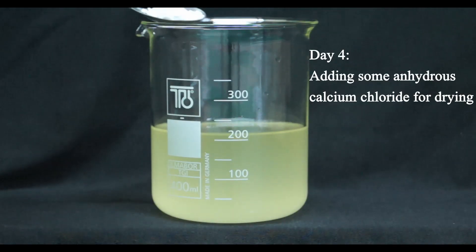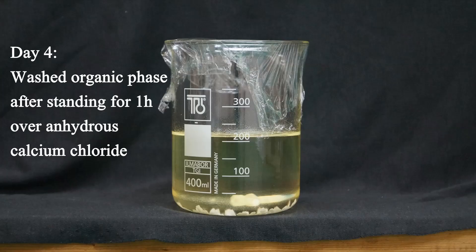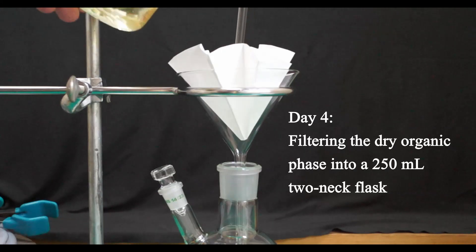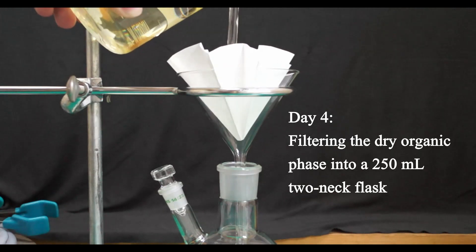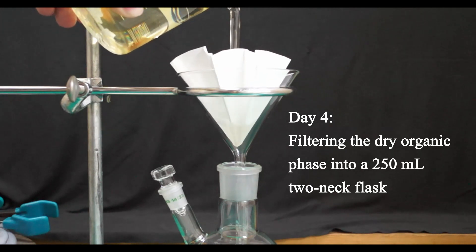After the last washing, I transferred the organic phase to a clean beaker and added three spatulas of anhydrous calcium chloride, covered the beaker with plastic wrap, and after standing for one hour, I filtered the now clear organic phase into a 250 ml two-necked round bottom flask.